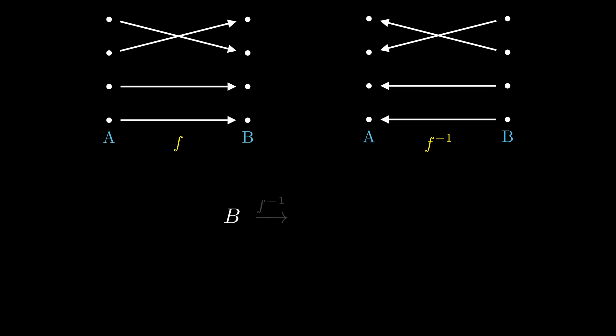We can also start with B, apply inverted F and then F itself, also yielding an identity. In this way, F and F inverted are each other's inverses when they are bijections. This brings us to a different way of defining functions.